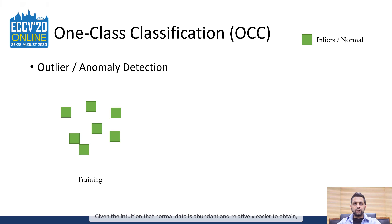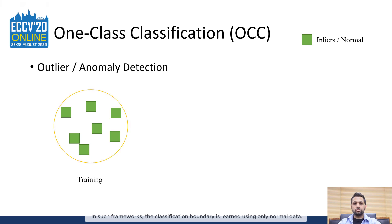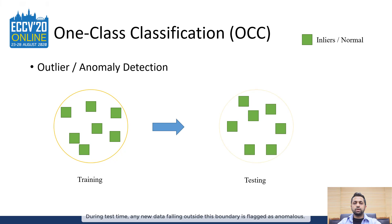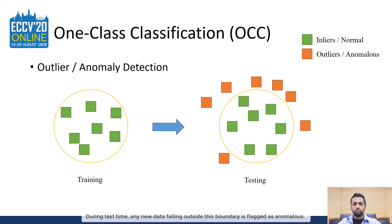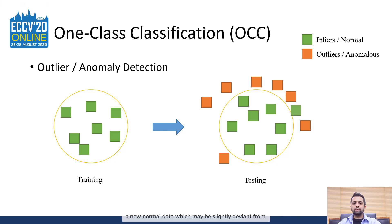Given the intuition that normal data is abundant and relatively easier to obtain, several researchers have proposed one-class classification networks. In such frameworks, the classification boundary is learned using only normal data. During test time, a new data falling outside this boundary is flagged as anomalous. However, a fundamental problem with such architectures is that if the boundary is too tight around the normal data, a new normal data which may be slightly deviant from the learned representations will also be flagged as anomalous.